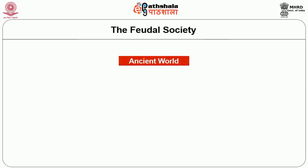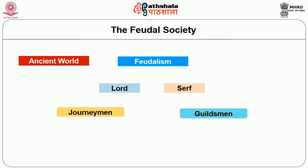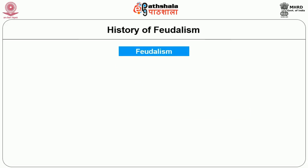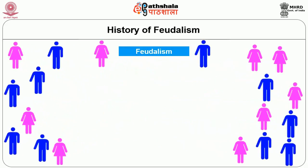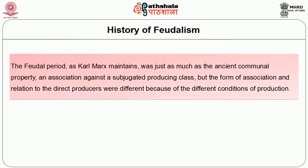The ancient world gave way to feudalism with its relationship between lord and serf, and between guildsmen and journeymen. Feudalism began around the middle ages where populations were scattered over a large area. During the last centuries of the declining Roman Empire and its conquest by barbarians, a considerable part of the productive forces was destroyed. Agriculture declined, industries decayed for want of market, and trade died out. The feudal period, as Karl Marx maintains, was just as much as the ancient communal property and association against a subjugated producing class, but the form of association and relation to the direct producers were different because of the different conditions of production.